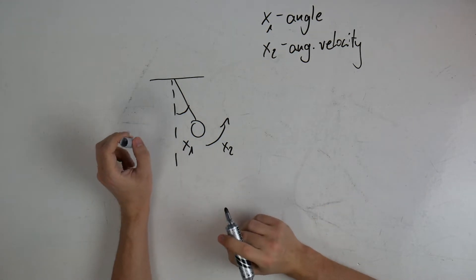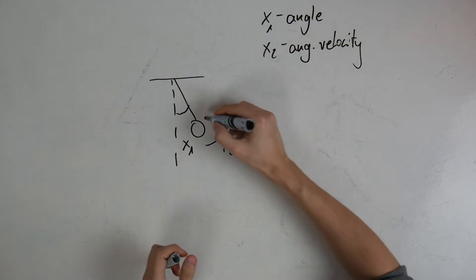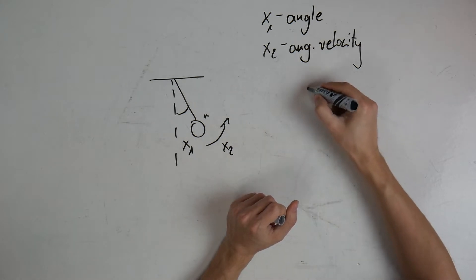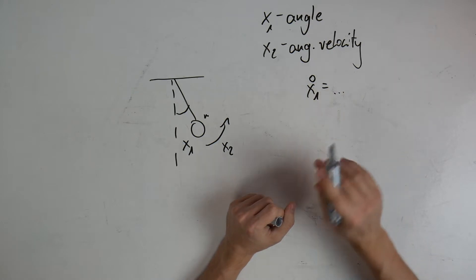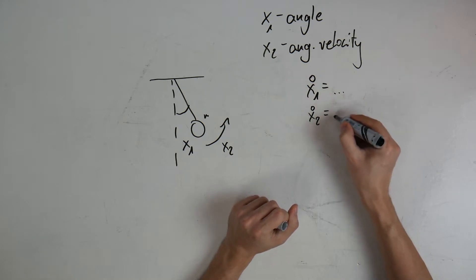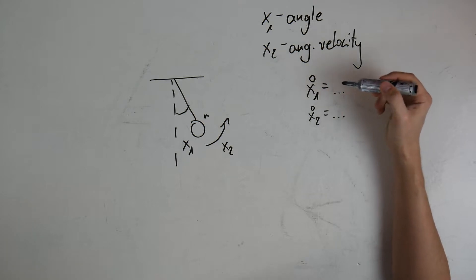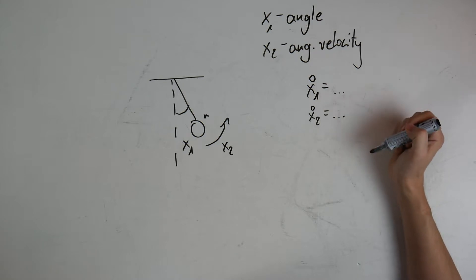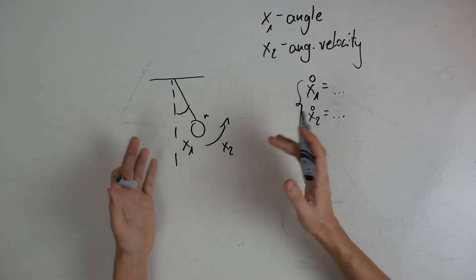I've got two states. Due to the existence of dynamics — I've got a mass and a length — I will have equations for the change of x1 over time and the change of x2 over time. The first is the change of position, so the velocity. The second is the change of velocity, so angular acceleration. These two govern the evolution of my system.